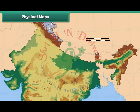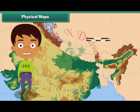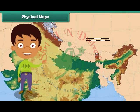Physical maps illustrate the physical features of an area such as mountains, rivers and lakes. Water bodies are usually colored blue in a physical map. Different colors are used to show different land elevations — green for lower elevations and orange or brown for higher elevations.